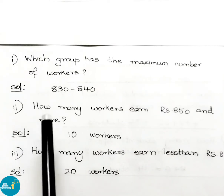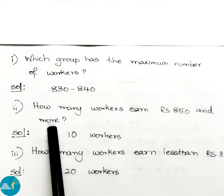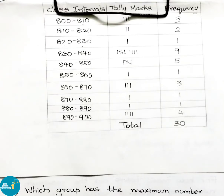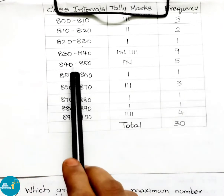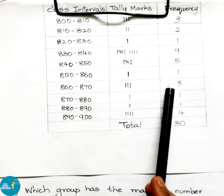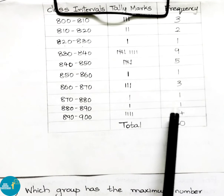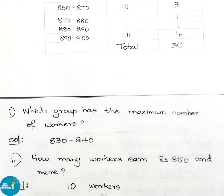Question 2: how many workers earn 850 rupees and more? Looking at the frequency distribution table, from 850 onwards we count: 1 + 3 + 1 + 1 + 4 = 10. So 10 workers are earning 850 rupees or more.